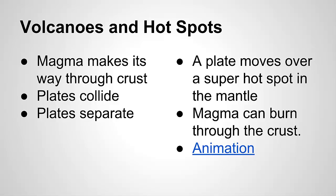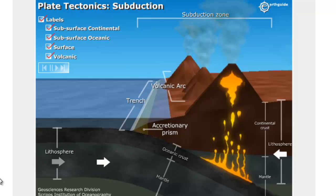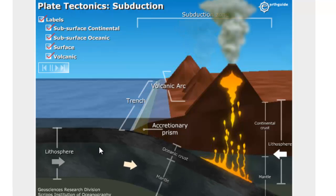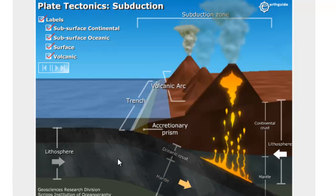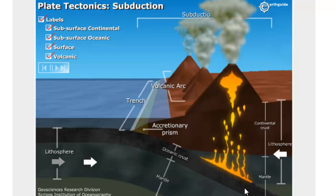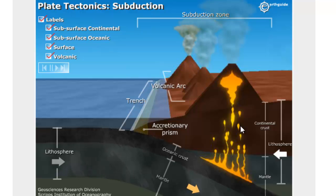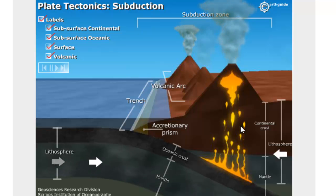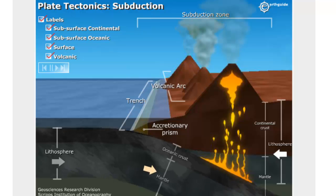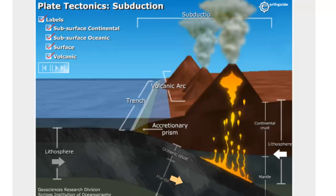Volcanoes and hotspots. Volcanoes form when magma makes its way through the crust, usually along plate boundaries. Plates collide with the lighter continental plate being pushed up and the denser oceanic plate sliding under. Crust that slides under is melted and forms magma. This creates a subduction zone.